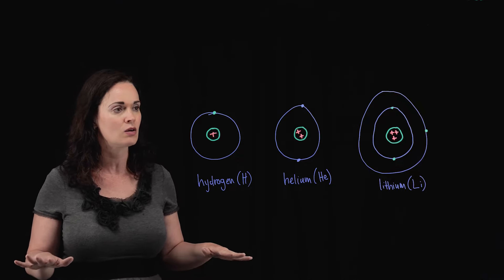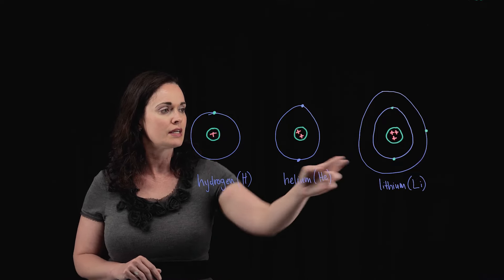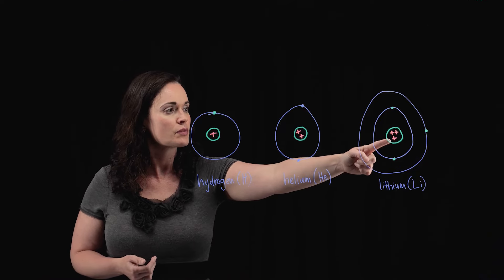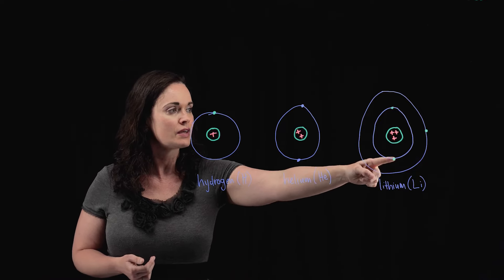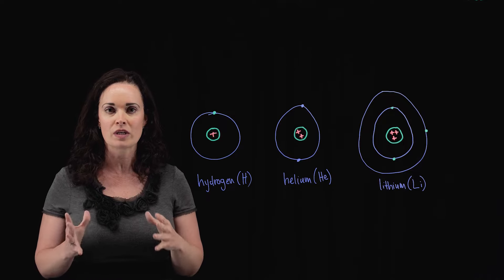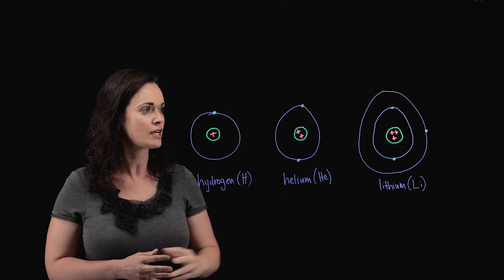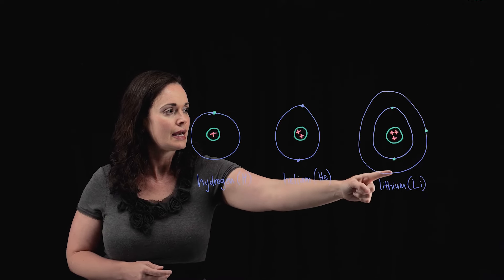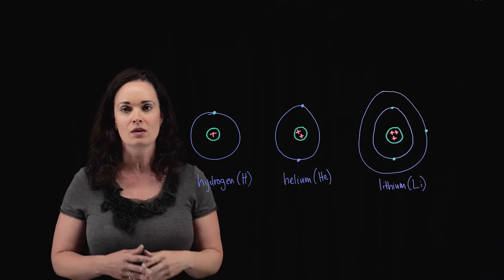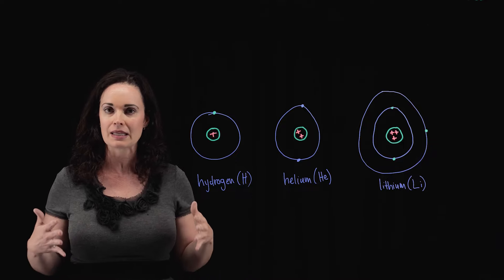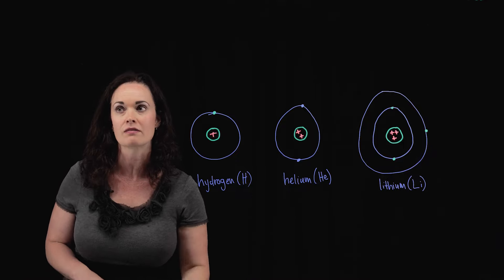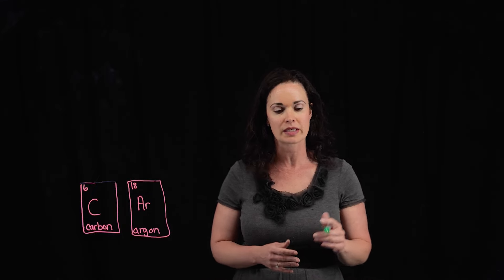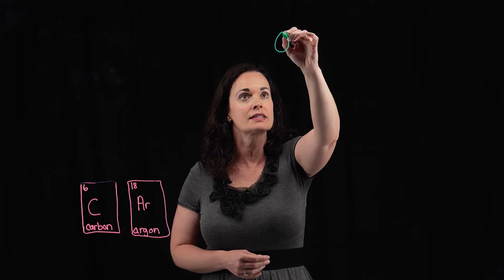That first shell can only hold two electrons — once it's full, it can't hold anything else. If you look at the Bohr model of lithium, it has an atomic number of three, so three protons and three electrons moving around the nucleus. Its first two electrons go in the first shell, and the third electron goes into the second shell because it can't fit into the first shell.